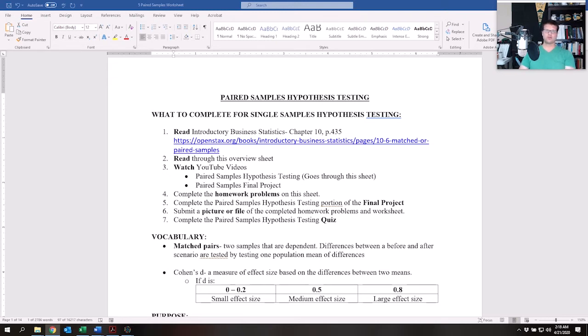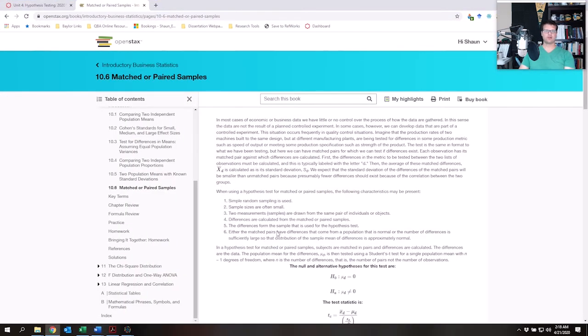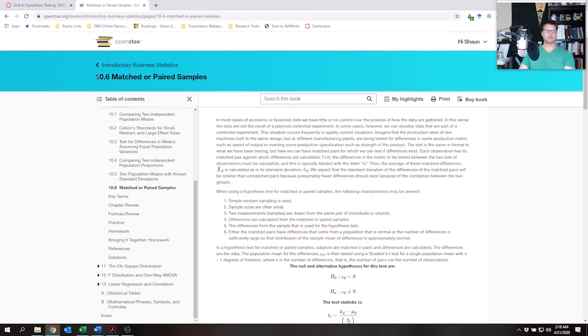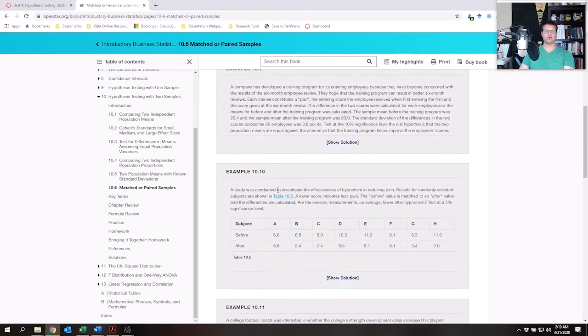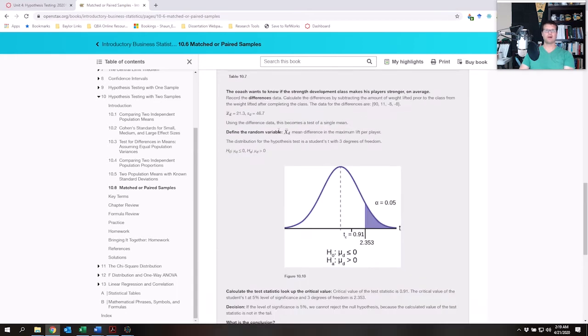In order to go through this, make sure that you read through the section in the book on matched pairs or samples. If you click on that it'll bring you to the section in the book, it's in chapter 10, specifically 10.6 matched pairs or paired samples, and it'll bring you through some examples and give you more information about that.